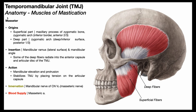The second muscle of mastication is the masseter, which is divided into two heads: the deep head and the superficial head. The superficial part originates on the maxillary process of the zygomatic bone and the inferior border of the anterior two-thirds of the zygomatic arch. The deep part originates off the deep inferior surface of the posterior one-third of the zygomatic arch. Both heads insert on the mandibular ramus — specifically its lateral surface — and also on the mandibular angle.